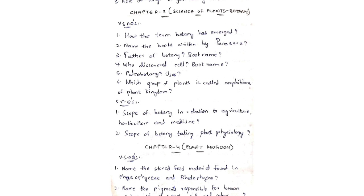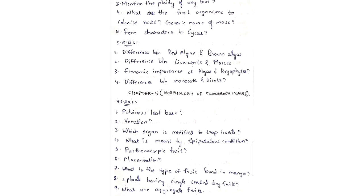Chapter 4: Plant Kingdom. VSAQs: name the stored food material found in Phaeophyceae and Rhodophyceae; name the pigments responsible for brown color of Phaeophyceae and red color; mention the ploidy of any four; what are the first organisms to colonize rocks; spore characters in Cycas. SAQs: differences between red algae and brown algae; differences between liverworts and mosses; economic importance of algae and Phaeophyceae; differences between monocots and dicots. LAQs are not very much necessary in this chapter.